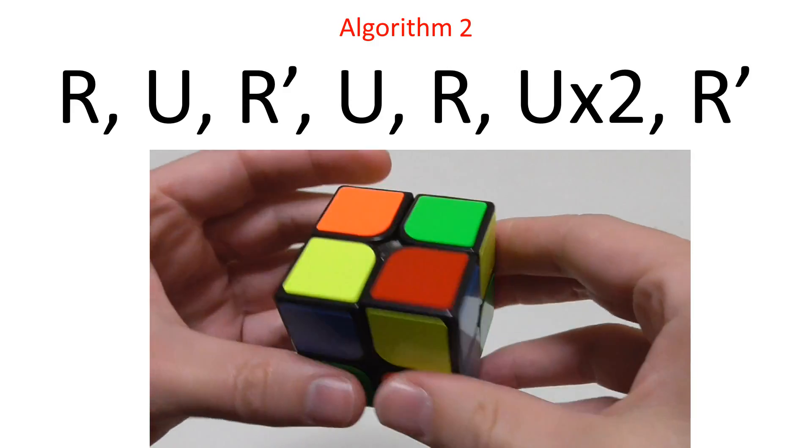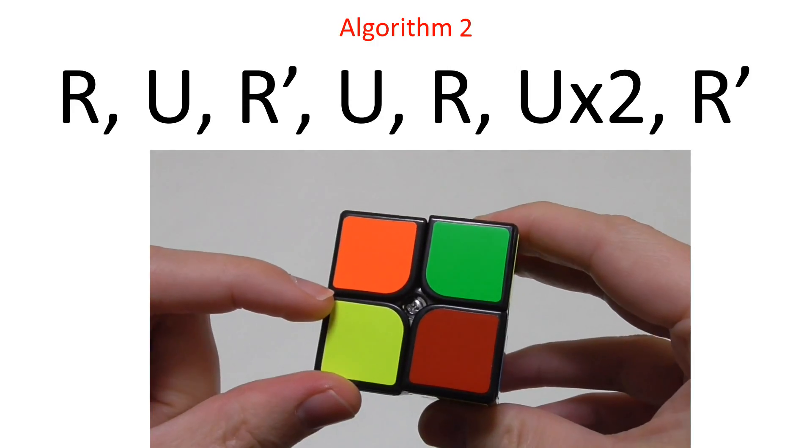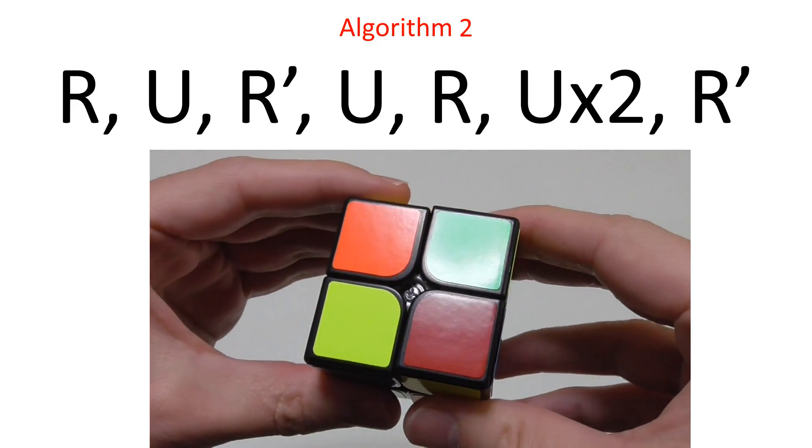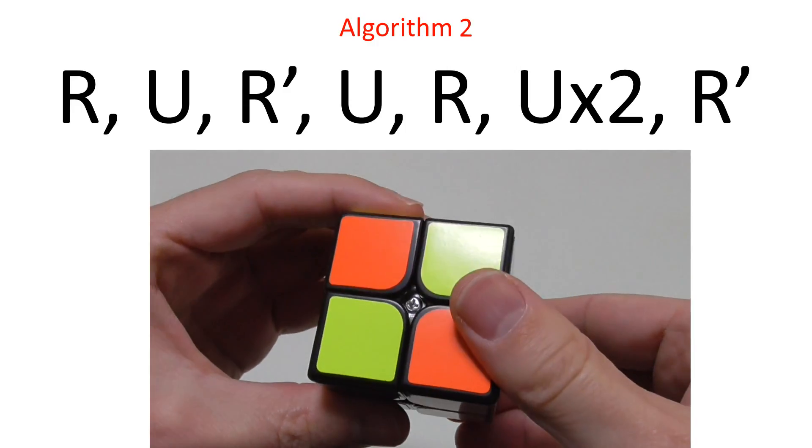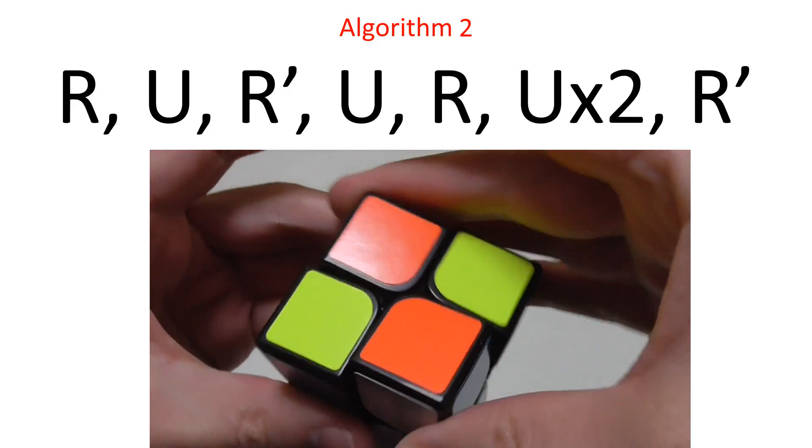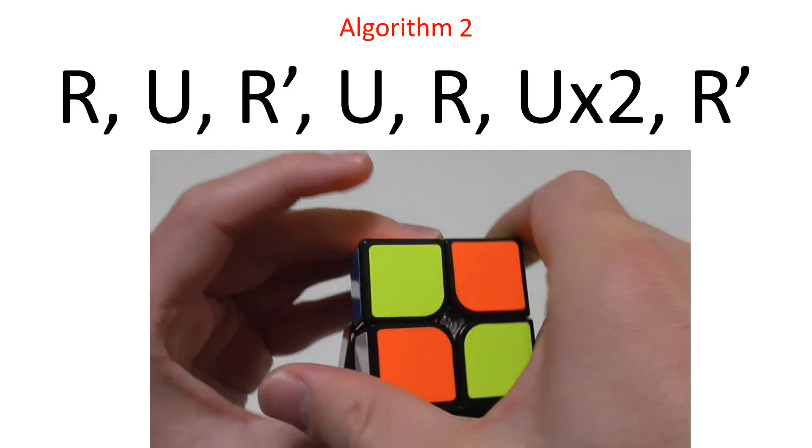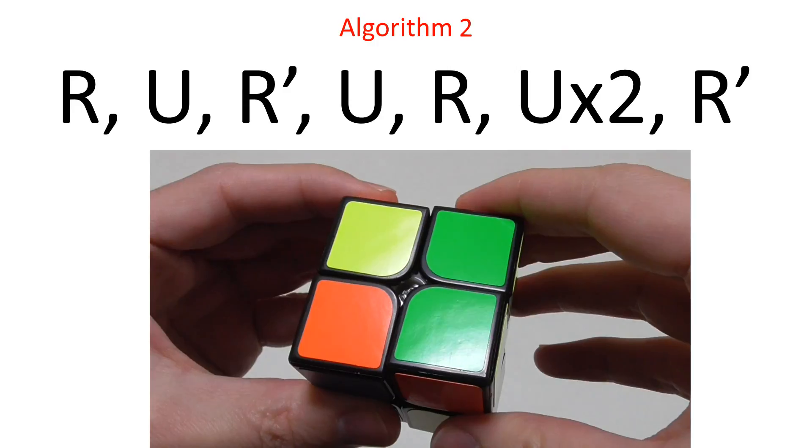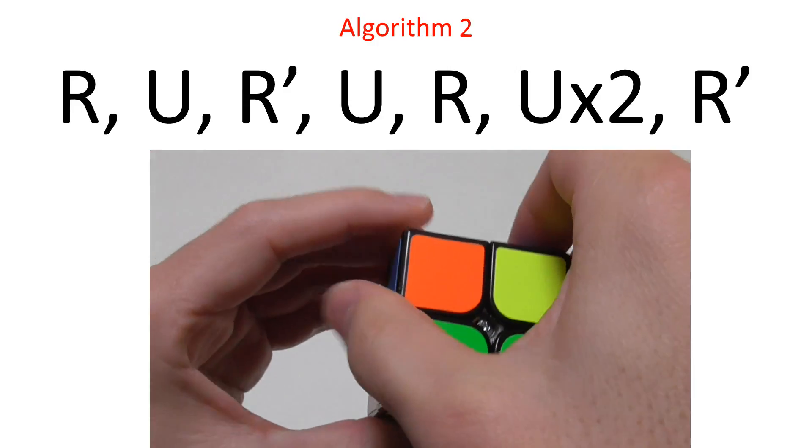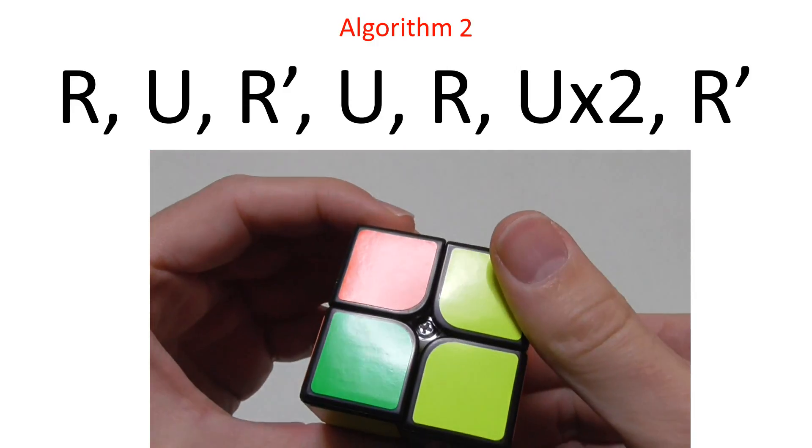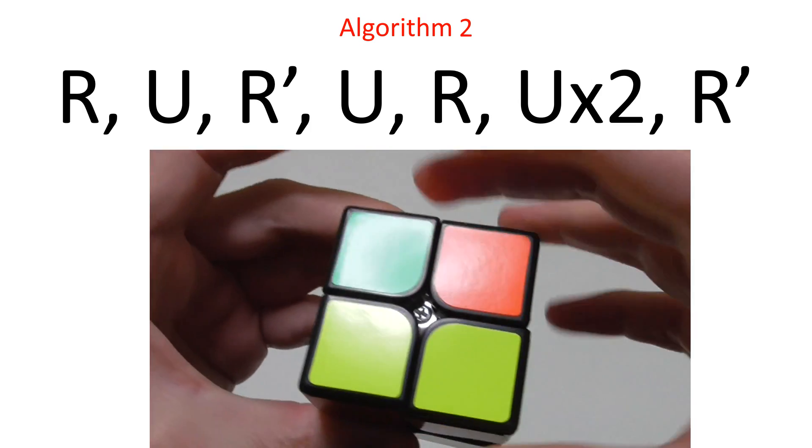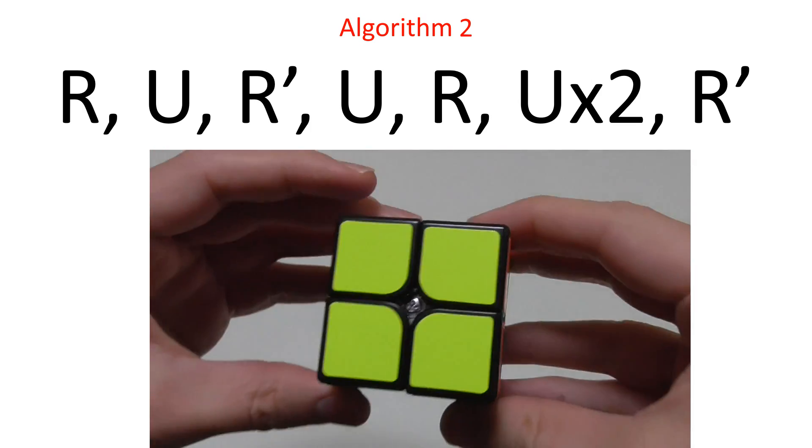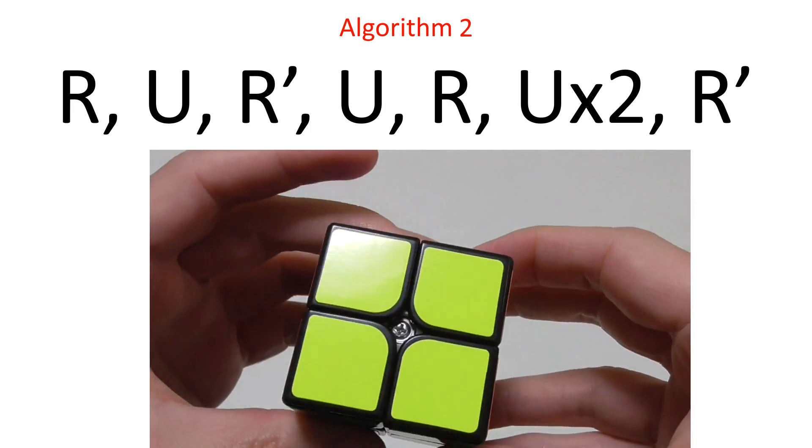So we've still got the white face, and now we've got one yellow square. Let's keep that at the bottom left, and repeat the algorithm. Right, up, right inverted, up, right, up twice, right inverted. And hey presto, we've now got a yellow face.